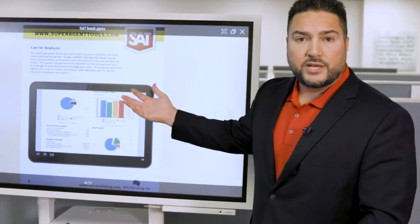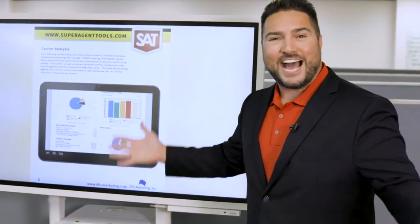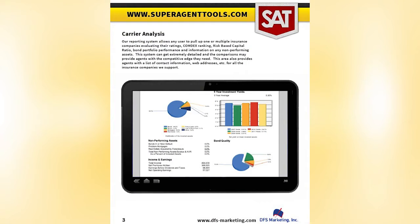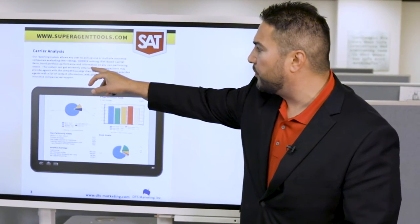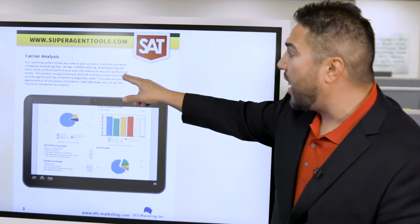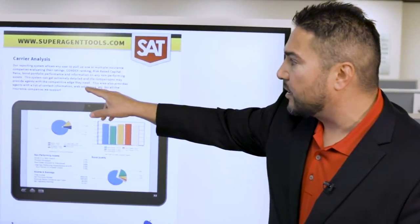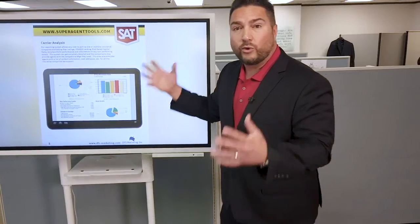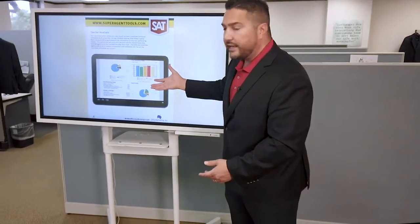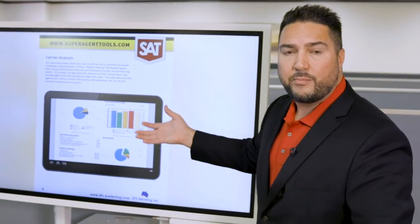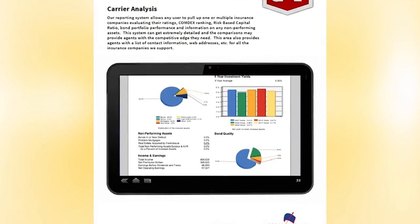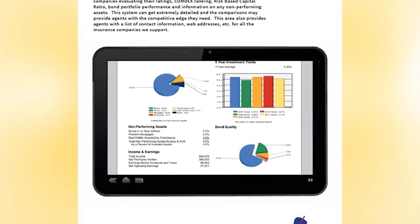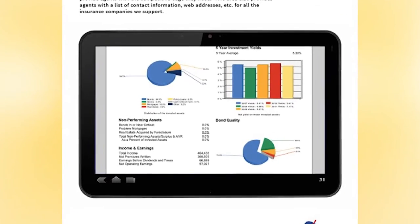We provide in the Super Agent Tool System a carrier analysis. I like the carrier analysis because you're able to go through the Comdex ranking, risk-based capital ratio, bond portfolio performance, and information on any non-performing assets. The system can get really detailed, and it'll provide a customer when you're meeting with them a pie chart. It'll go over what does the carrier invest in, what is their income to earnings, what do they put the client's money in, what are the average returns, what's the internal rate of returns,